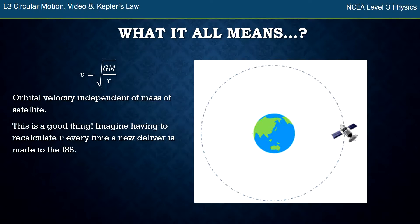Imagine if this formula had the little m in it still. Every time you delivered food or a person to the International Space Station, you'd have to recalculate and change that velocity. But it doesn't, so it's a good thing the universe is built this way.